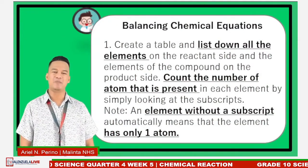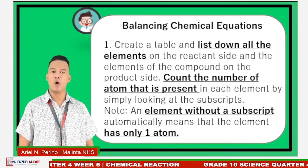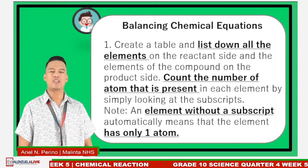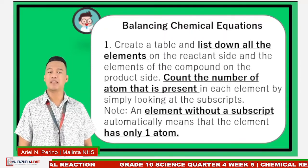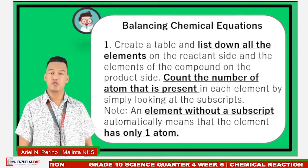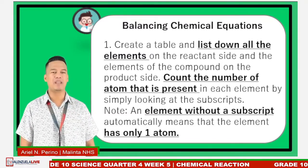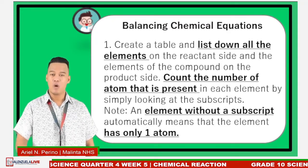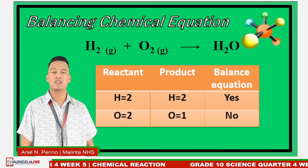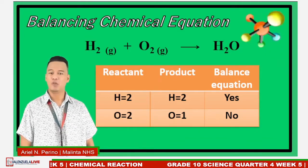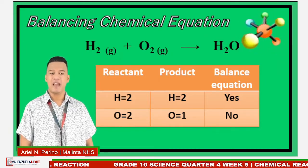Here are the steps in balancing chemical equations. First, create a table and list all elements on the reactant side and the elements of the compound on the product side. Count the number of atoms present in each element by looking at the subscript. Note: an element without a subscript automatically means it has only one atom. In this reaction, the reactants have two hydrogen and two oxygen atoms, while the product side has two hydrogen and one oxygen atom.